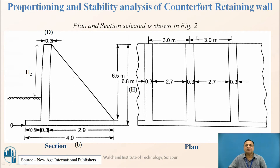The layout shows: toe slab projection of 0.8 m, stem thickness of 0.3 m, heel slab of 2.9 m, and counterfort thickness of 0.3 m. In plan, the stem slab and counterforts are placed at 3 m center to center, giving a clear distance of 2.7 m.